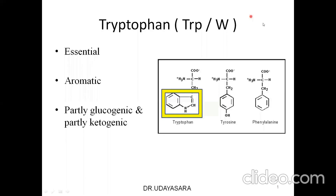This class is about the aromatic amino acid tryptophan, designated by the three-letter abbreviation TRP or by the single letter W. It is an essential amino acid, otherwise known as an indispensable amino acid, in which the carbon skeleton cannot be synthesized in humans and must necessarily be provided in the diet.